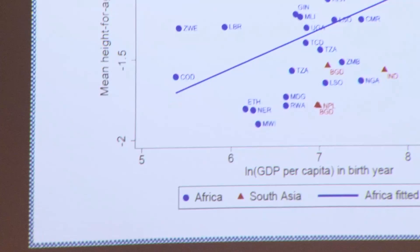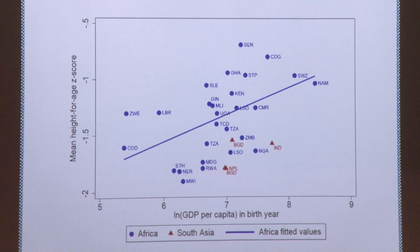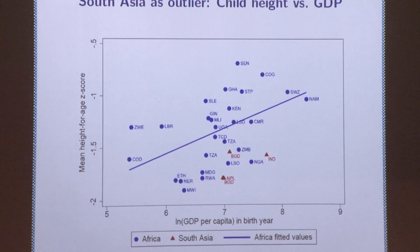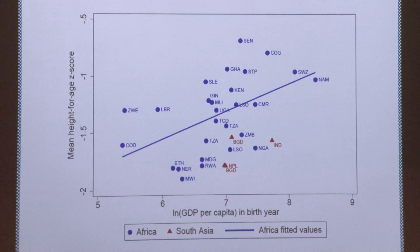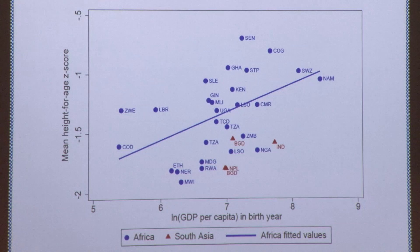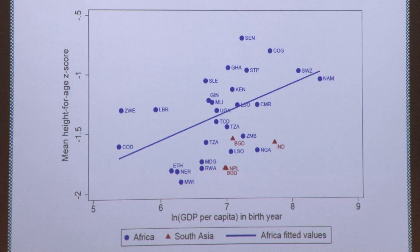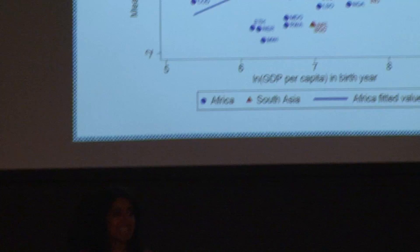Here's a picture using demographic and health surveys for several African countries and for India. The blue dots are average child height on the vertical axis for different African countries, with the x-axis showing GDP per capita. You can see that in richer countries, average height is higher, and the line is the fitted line for African countries. The red triangles are India and other South Asian countries, and those triangles are below the regression line — so for their level of GDP per capita, South Asian children, and India in particular, are short. And if we looked at other health metrics, India isn't a negative outlier — child height has been this outlier.